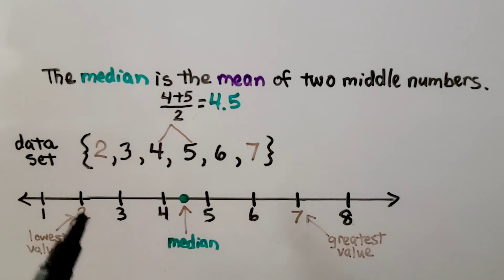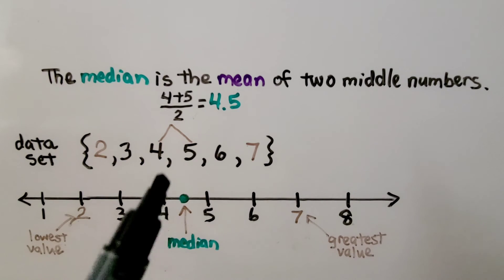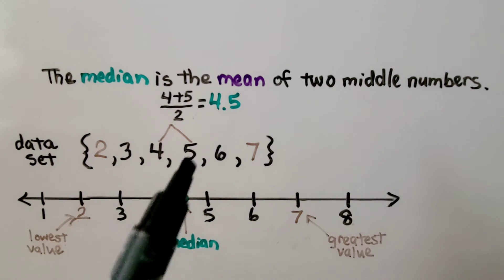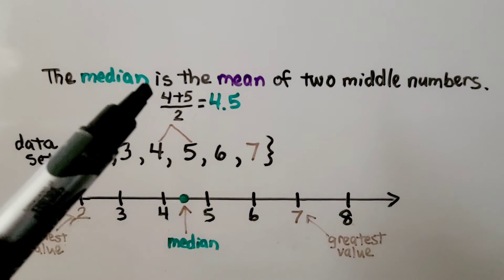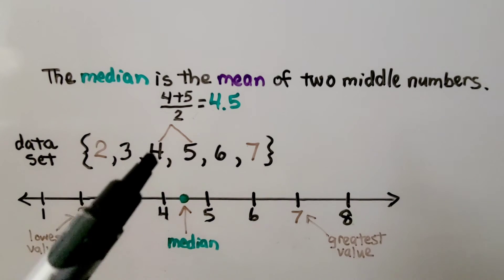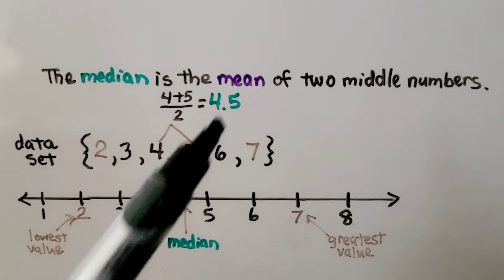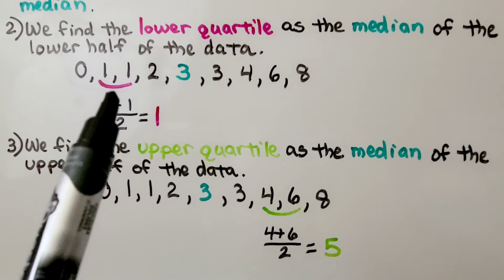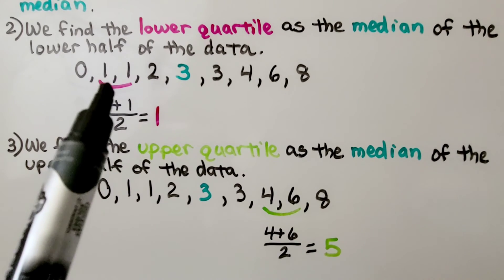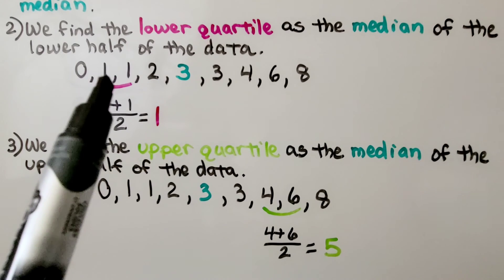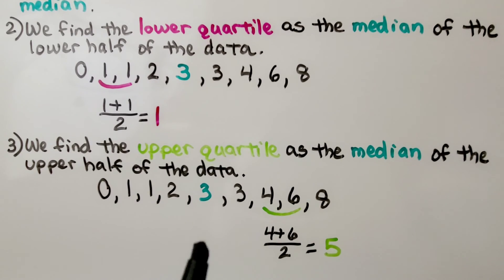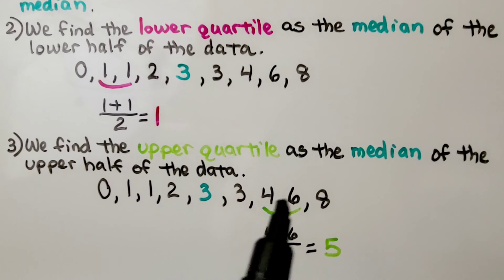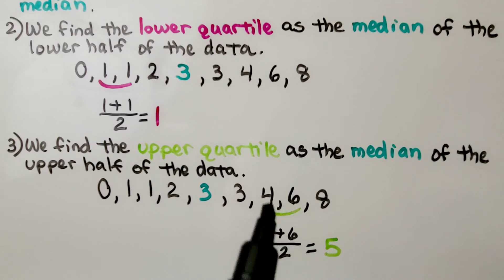This data set goes in order from 2 to 7, so the median would be found using the two middle numbers, 4 and 5. We add 4 plus 5 to get 9, then divide by 2, giving us 4.5 for the median. We do the same thing for the lower quartile — if there are two middle numbers, we find the average as the median of the lower half. With the upper quartile, same thing: we find the mean of the two middle numbers for the upper half of the data.